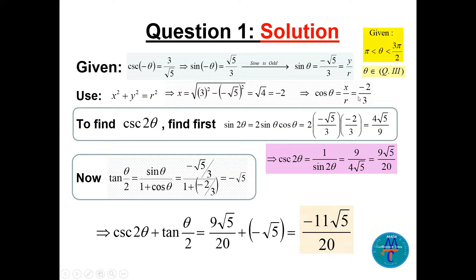To find cosecant of 2 theta, first find sine of 2 theta using the double angle formula: 2 sine theta cosine theta. Substituting the values gives 4 root 5 over 9. Then cosecant of 2 theta equals 1 over sine of 2 theta, which is 9 over 4 root 5. Rationalizing by multiplying by root 5 over root 5 gives 9 root 5 over 20.